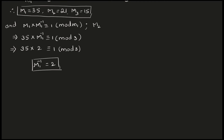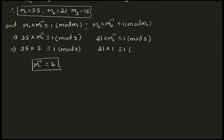Next, M2_inverse. M2 into M2_inverse is congruent to 1 mod m2. M2 is 21, so 21 into M2_inverse is congruent to 1 mod 5. By inspection, 21 into 1 is 21, and 21 divided by 5 gives remainder 1. So M2_inverse is equal to 1.